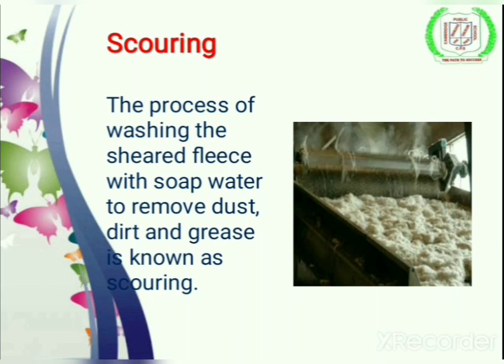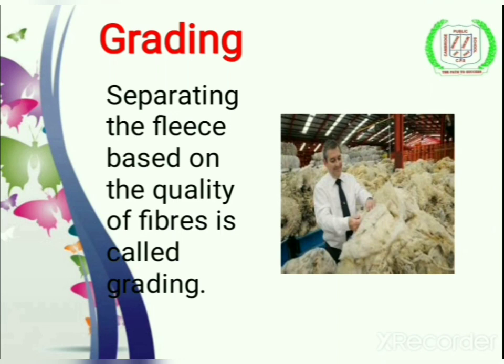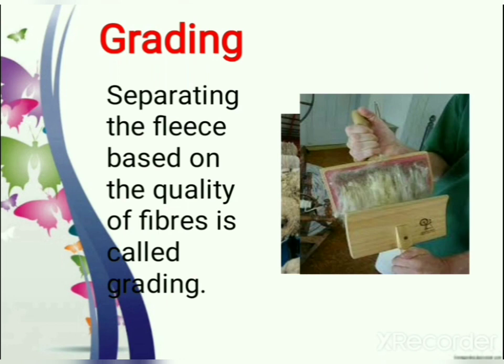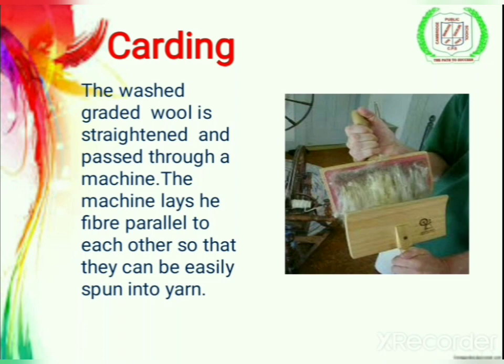Now, grading — separating the fleece based on the quality of fibers is called grading. Next, carding — the washed graded wool is straightened and passed through a machine. The machine lays the fibers parallel to each other so that they can be easily spun into yarn.